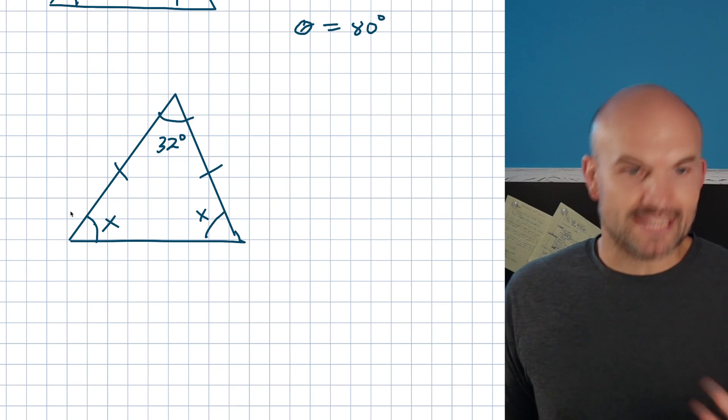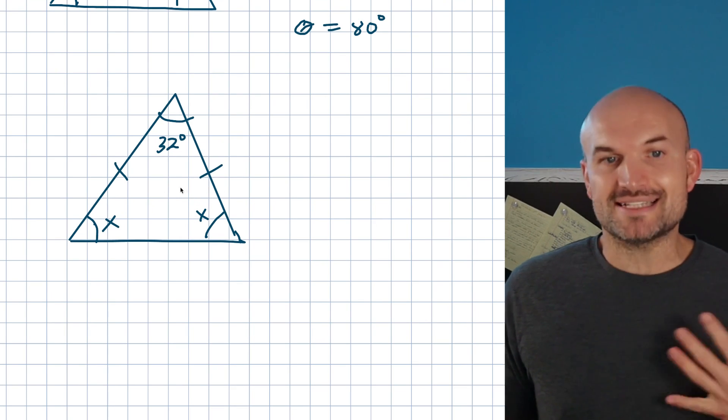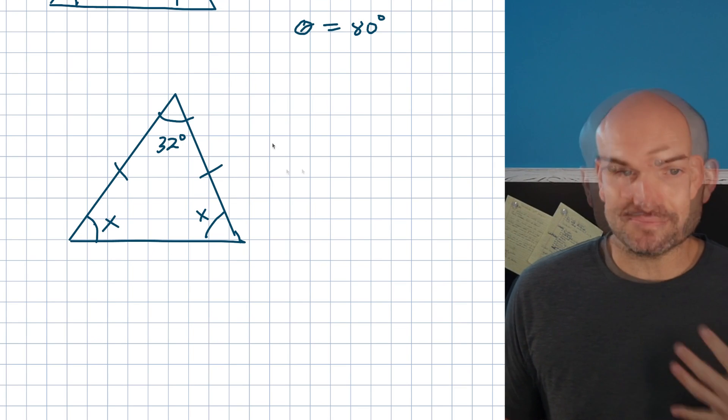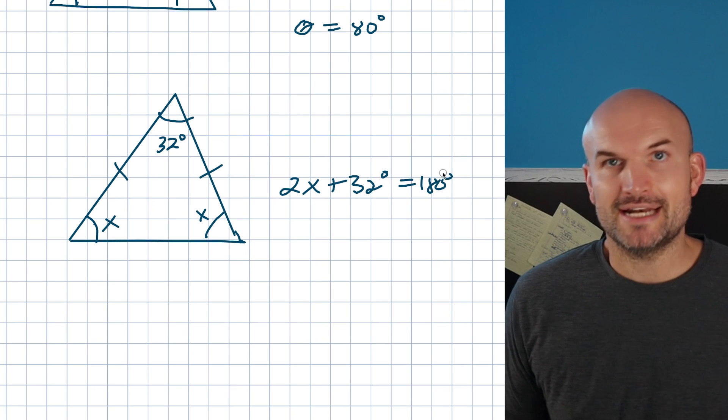So, again, now we have a relationship. We know all the angles in a triangle equals 180 degrees, so now we can use our property of an isosceles triangle, as well as the properties of interior angles of a triangle, to write an equation 2x plus 32 degrees is equal to 180 degrees.